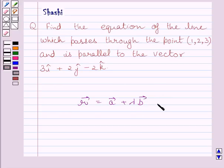In this equation, a vector is the position vector of the given point and r vector is the position vector of an arbitrary point p on the line, and lambda is the parameter. This is the key idea to solve the given question.